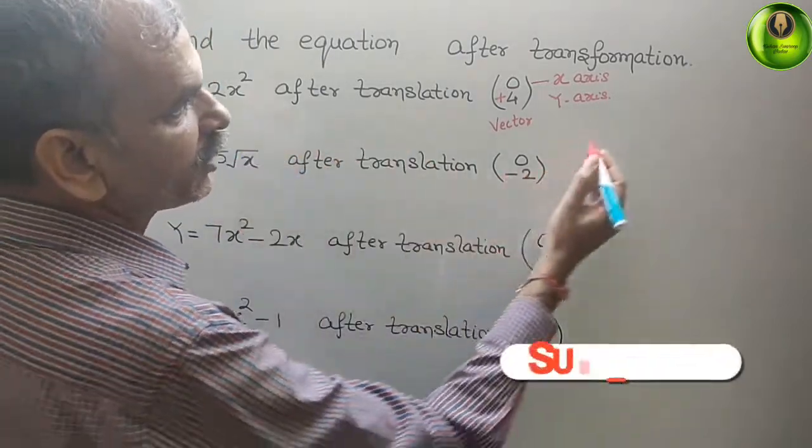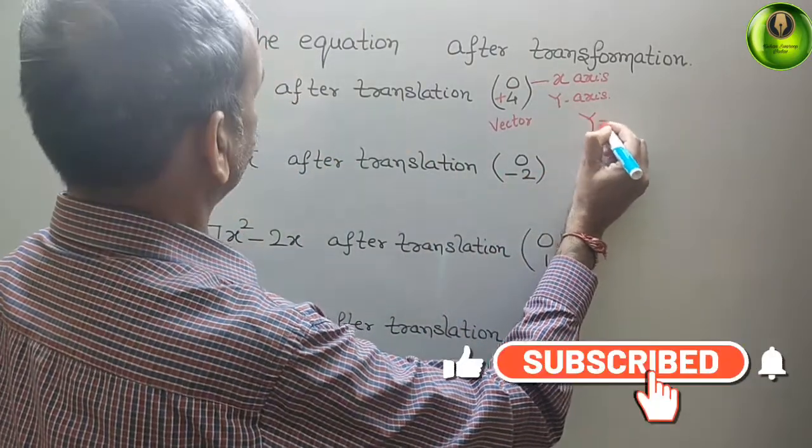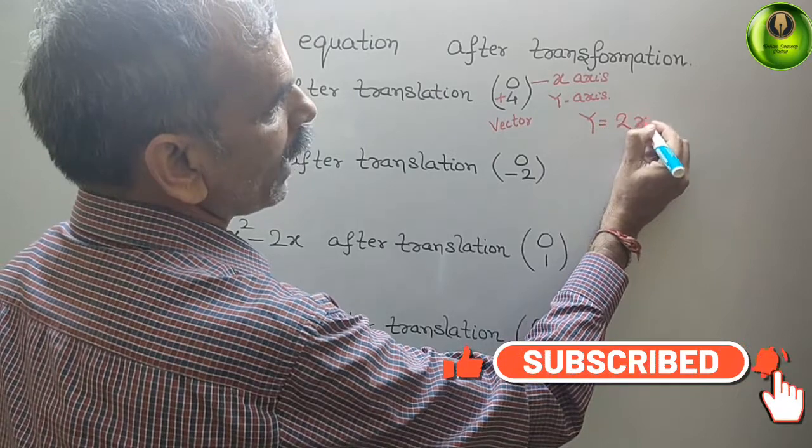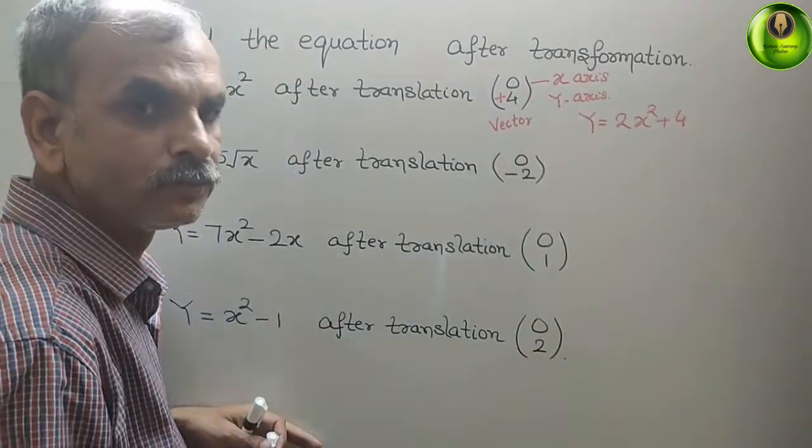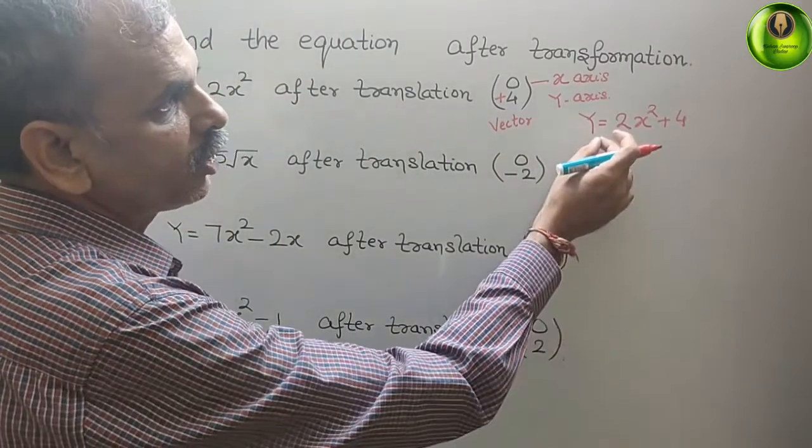Therefore, you will get the equation like this: y = 2x² + 4. So this is your equation now.